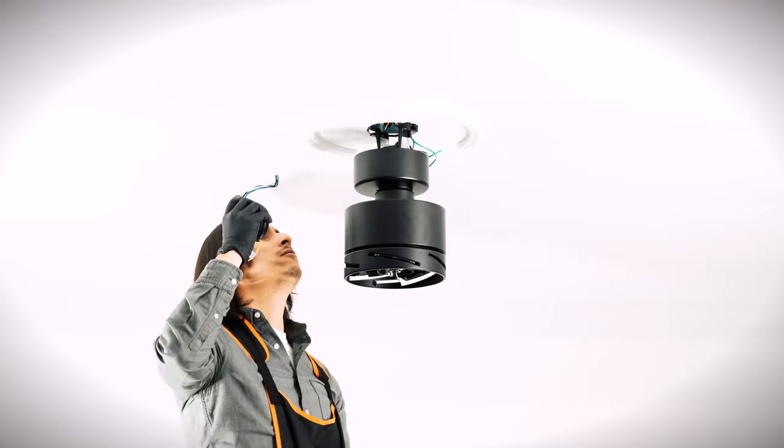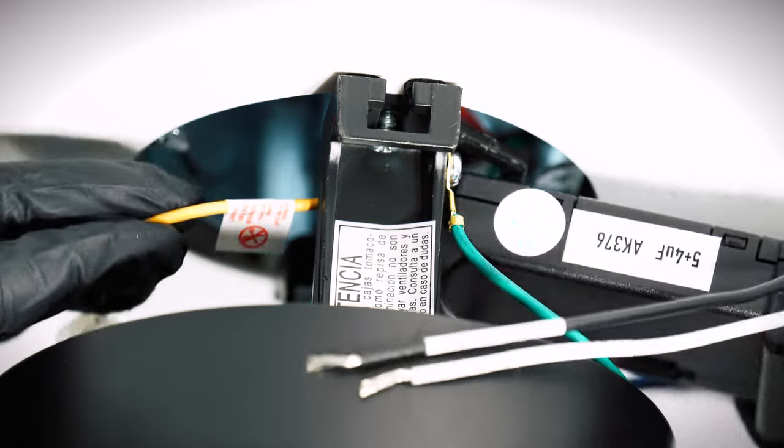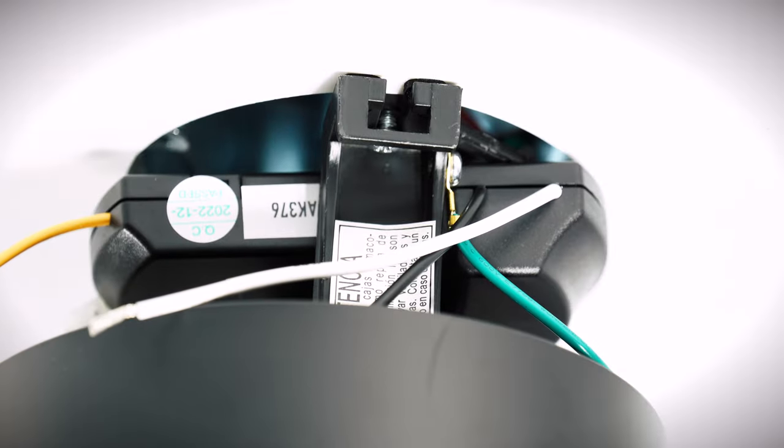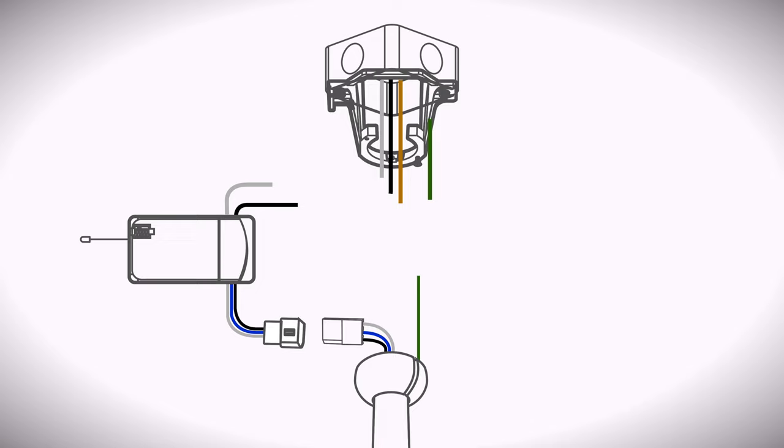Bring the receiver up to the ceiling box. Slide the receiver into the mounting bracket with the flat side facing up. Now you can make the electrical connections. Combine the ground wires from the ceiling box, downrod, and mounting bracket together with a wire nut.